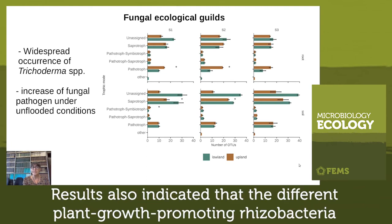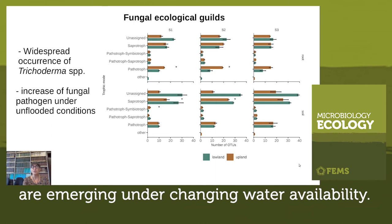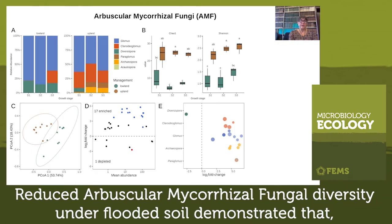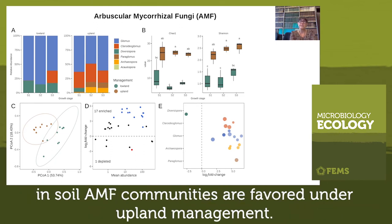Results also indicated that different plant growth-promoting rhizobacteria are emerging under changing water availability. We observed reduced arbuscular mycorrhizal fungal diversity under flooded soil, demonstrating that AMF communities are favored under upland management.